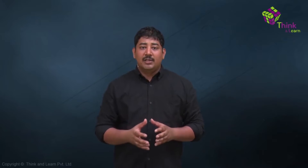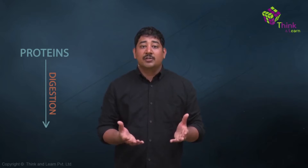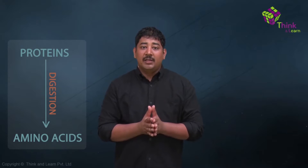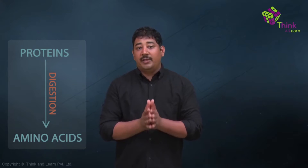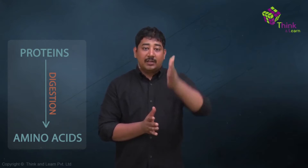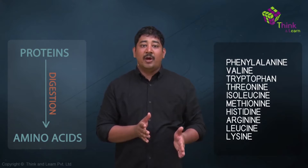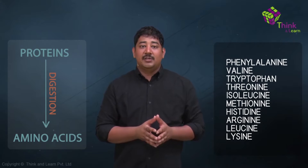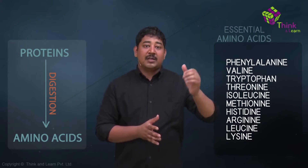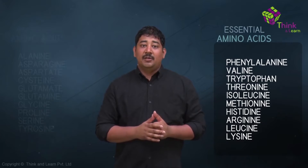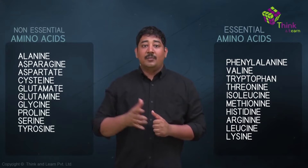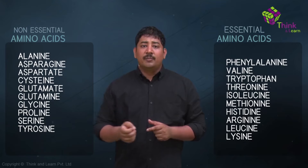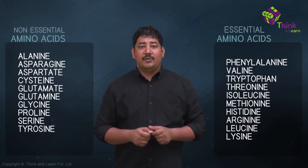Amino acids are used to build and assemble proteins, but they are also the end products of protein digestion. Our body cannot produce all of them. In fact, there are 10 amino acids that our body needs to acquire from our diet in sufficient amounts. They are therefore termed essential amino acids. The remaining 10 are termed non-essential amino acids, and our body can produce them in sufficient amounts.